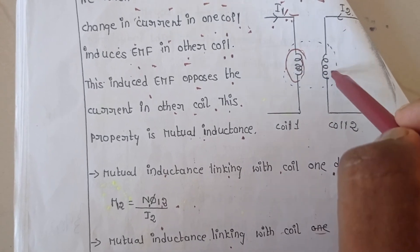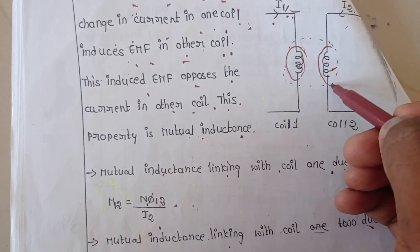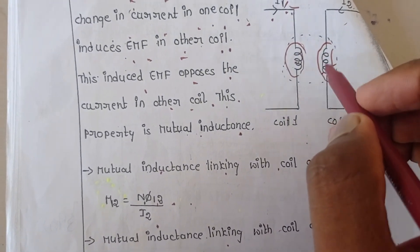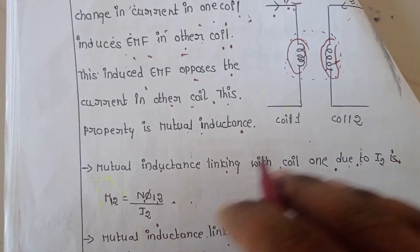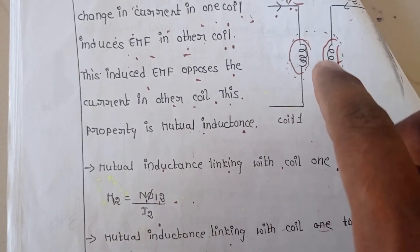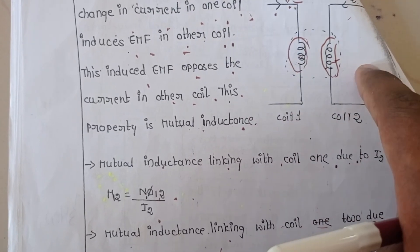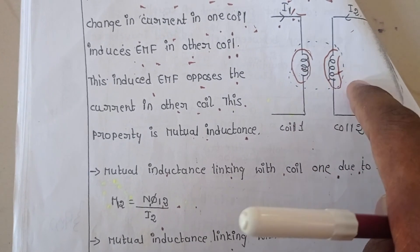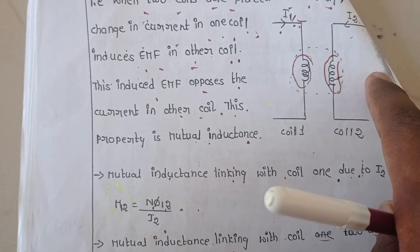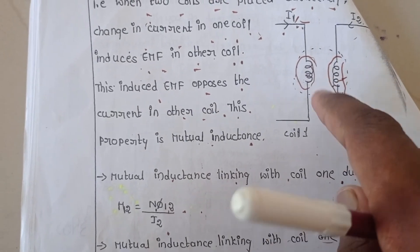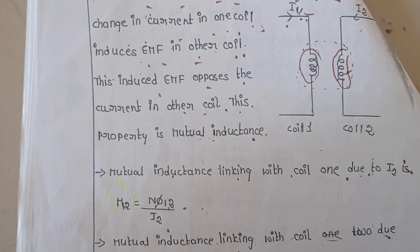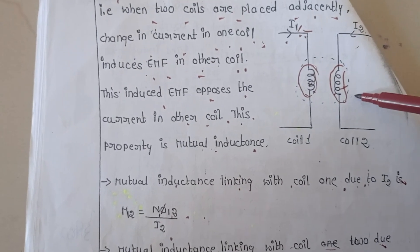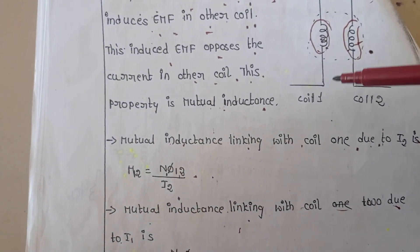When the second coil produces a magnetic flux, that magnetic flux is linked with the same coil and also with the adjacent coil. The magnetic flux produced by each coil is linked with that coil and the other coil as well. That is why whenever we change the current in one coil, there is an EMF induced in the other coil, according to Faraday's law. This current change in one coil producing EMF in the other coil is nothing but mutual inductance.